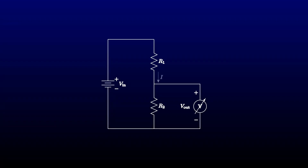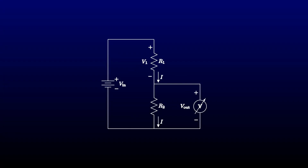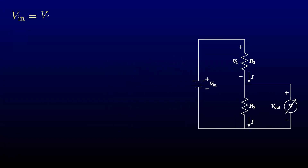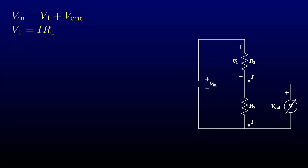Kirchhoff's current law tells us that the current in the top resistor is equal to the current in the bottom resistor. Kirchhoff's voltage law tells us that the voltage across the top resistor plus the voltage across the bottom resistor is equal to the input voltage. Ohm's law relates the voltages and currents in the two resistors. Okay, let's calculate.